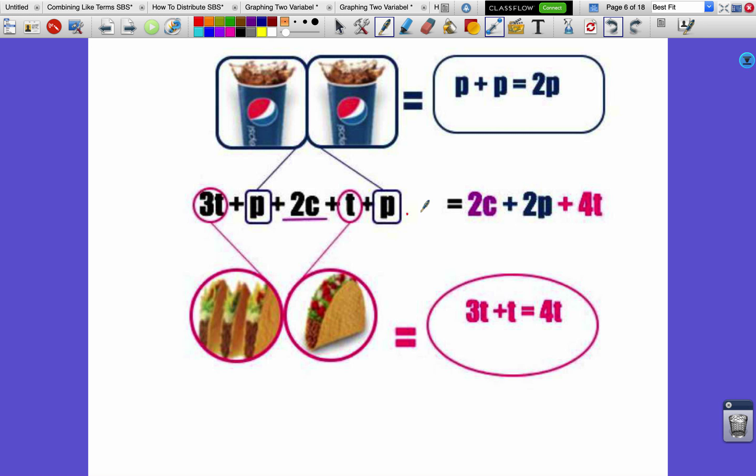So we can represent that - what's actually happening here is we're combining like terms, representing that with variables and just adding their coefficients. So the whole order all together, if you add them all together, becomes 2c + 2p + 4t, and that's going to be a lot quicker to assemble and hand over.